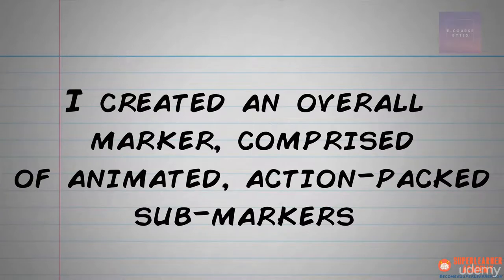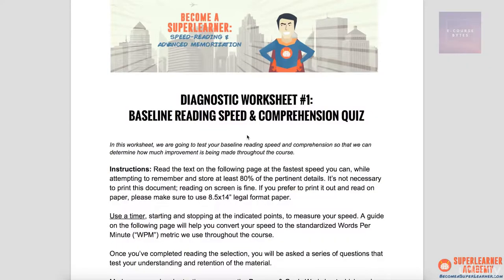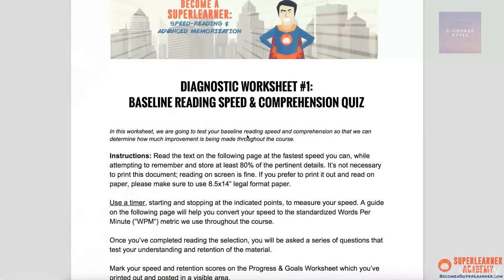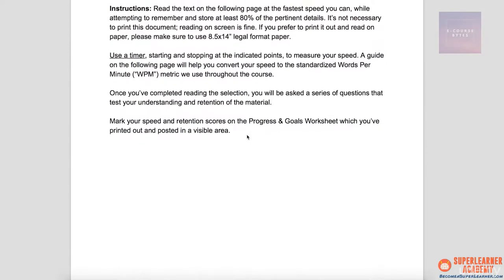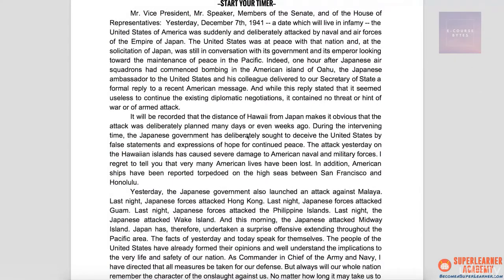Did you see how I created an overall marker comprised of animated, action-packed sub-markers, each representing a significant detail about the piece of information? Now that we've seen how all this works, let's try it out with a written text. This is the culmination of everything we've learned — now we're going to try it all out and put it all together with reading an actual text. I'm going to read you a text you've already read, so the content is not distracting, because the focus here is on the markers and on the linking. You've seen this already during your baseline reading speed and comprehension quiz. As I read it, I'm going to show you the markers I create as I go along, and take brief pauses to explain them.